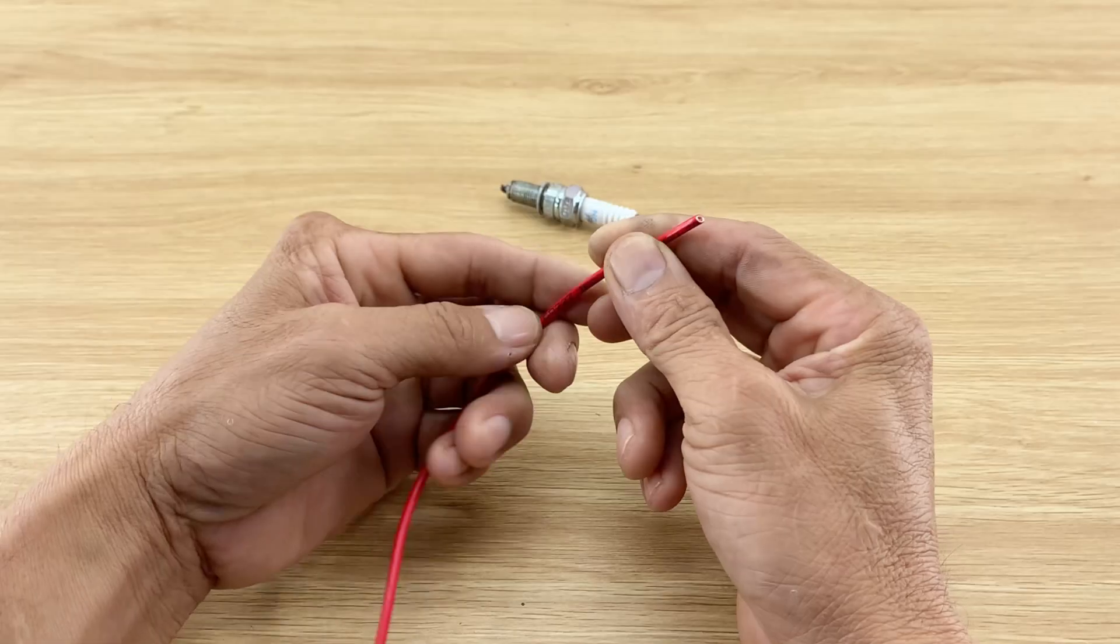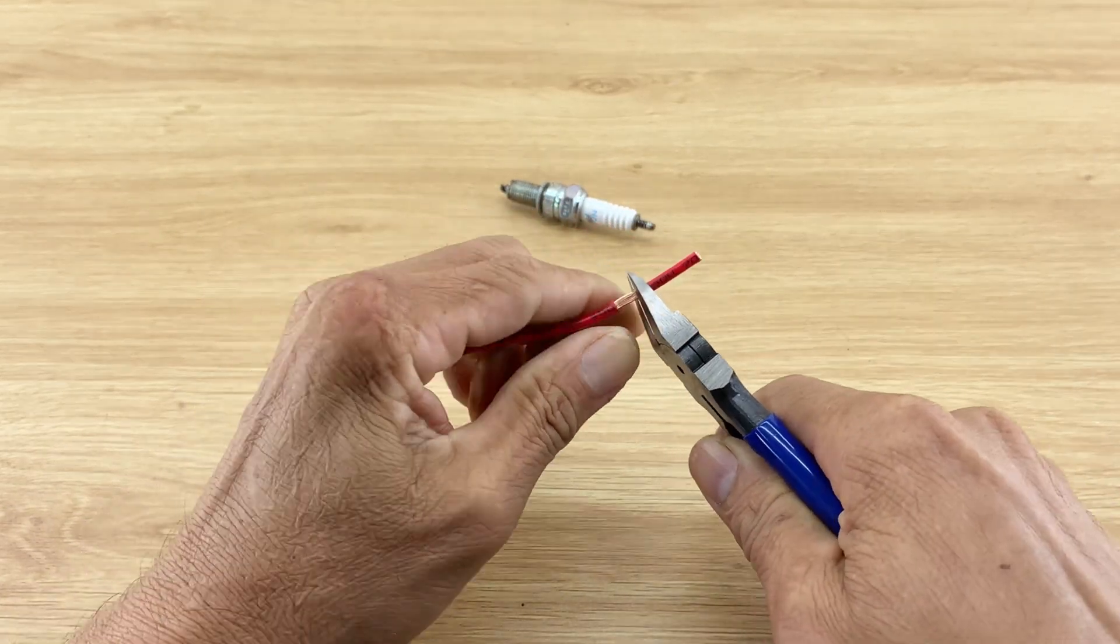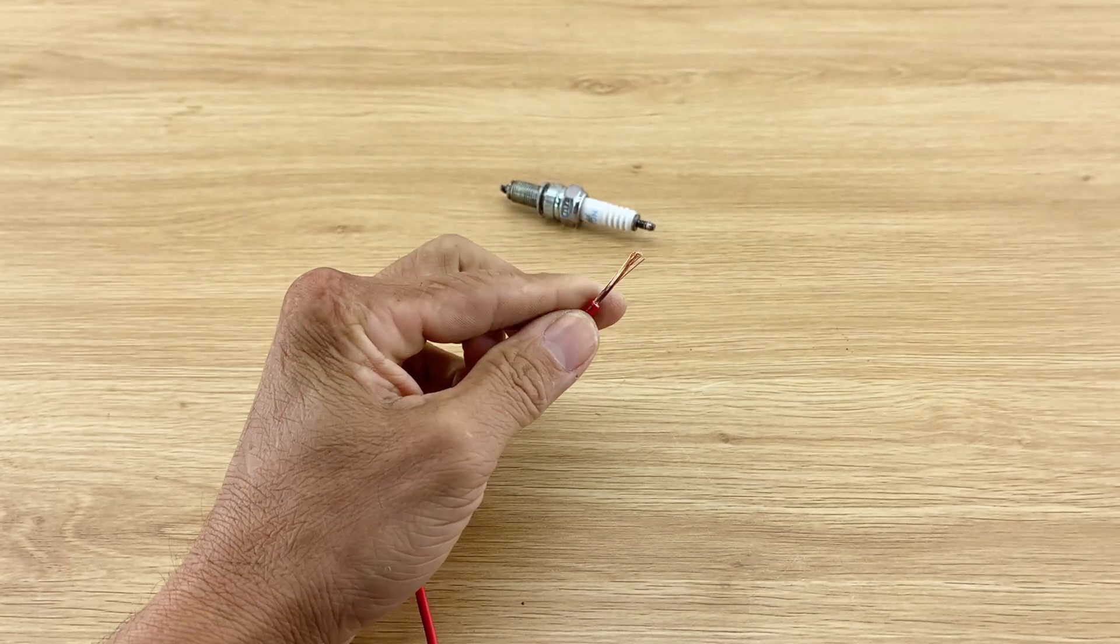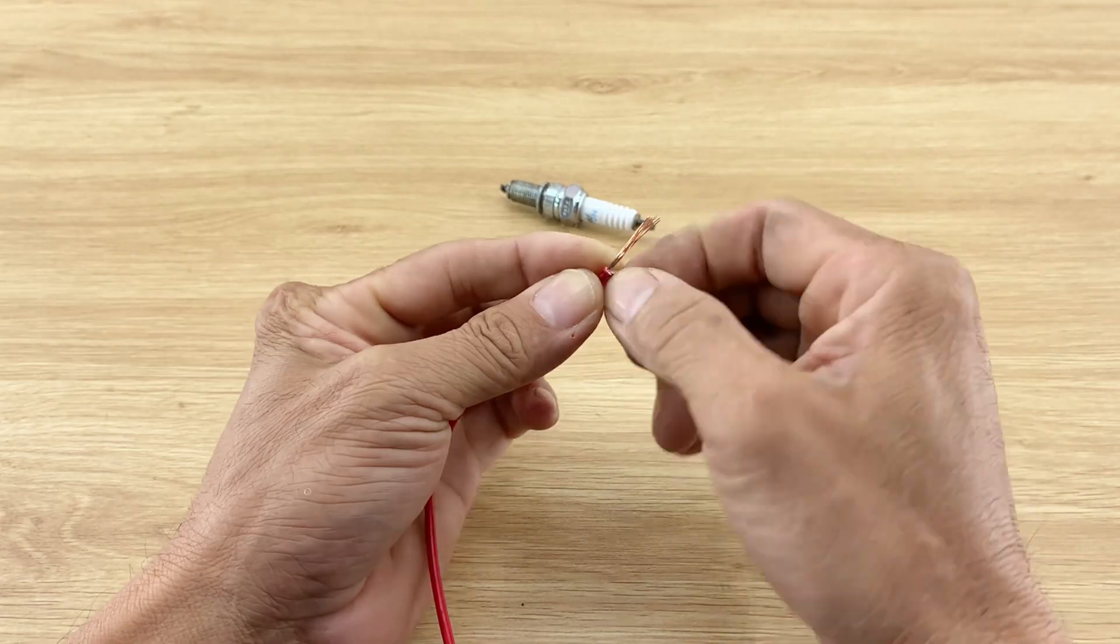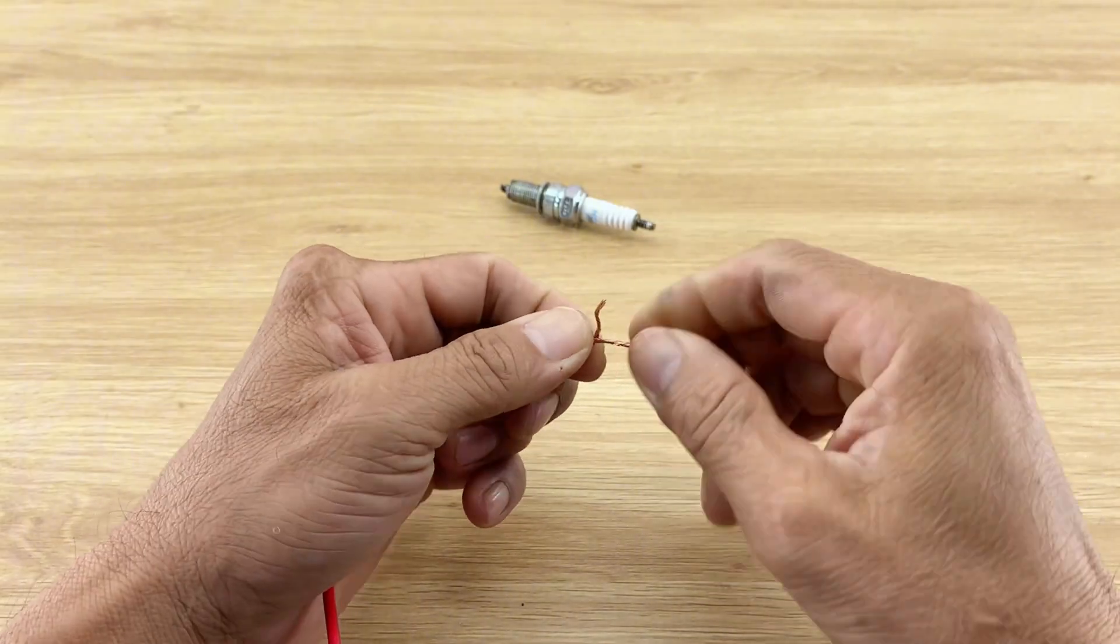To begin its transformation, I take a red electrical wire and carefully strip a small section of its insulation using my pliers. After stripping the insulation, I split the copper wire core into two parts and then twisted them tightly.